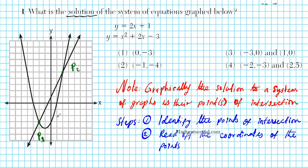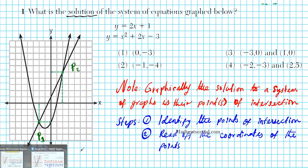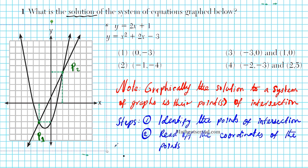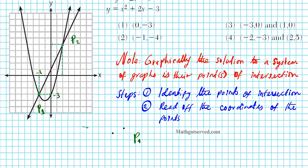Let's go ahead and find the coordinates of these points. We'll trace each point to the x-axis and to the y-axis to determine the coordinates. Tracing the first point: going in the negative x direction, that's negative 2. Then going down, that's negative 3. So that tells us the coordinates of our first point of intersection. P1 has coordinates: negative 2 for x and negative 3 for y.